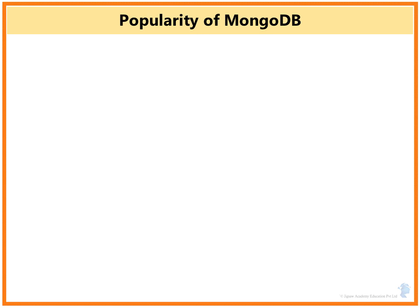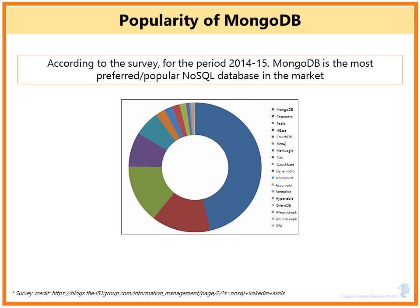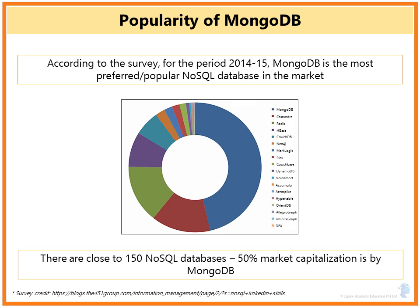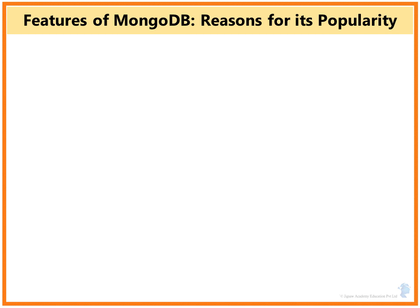Regarding MongoDB's popularity: according to a survey from 2014-15, MongoDB is the most preferred NoSQL database in the market. There are close to 150 NoSQL databases, of which MongoDB holds about 50% market share. Looking at the distribution chart, MongoDB tops the list, followed by Cassandra, then Redis and HBase, which are closely competing with each other.